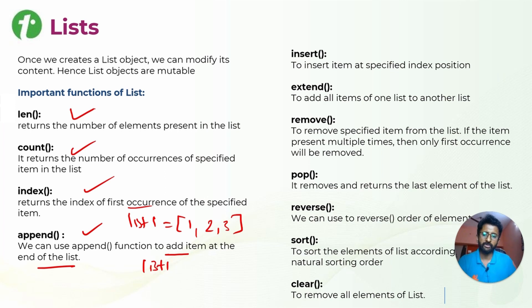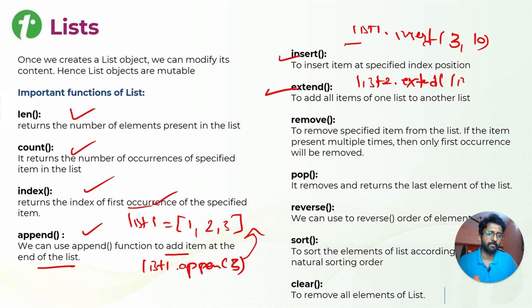For example, you have a list with one, two, three, and now you are doing list1.append(5), so it will append at last. Then we have insert - you can also tell it to insert at a specific index. For example, list1.insert, index 3, and value will be 10. We can also extend to another list. For example, you have list1 and list2 - you can just do list2.extend(list1), so that way your first list and second list will be added together.